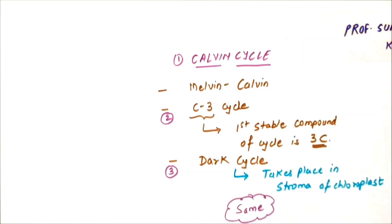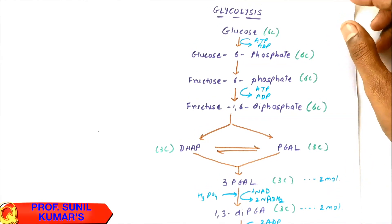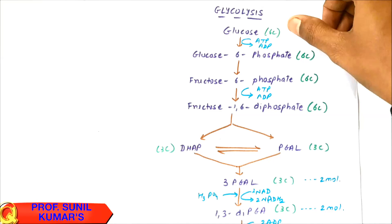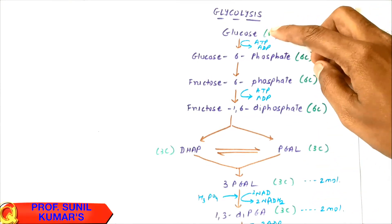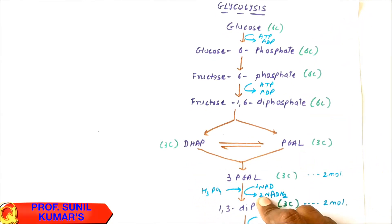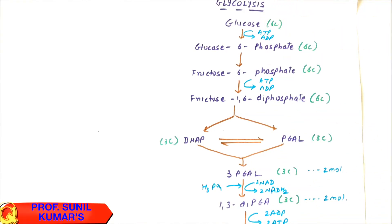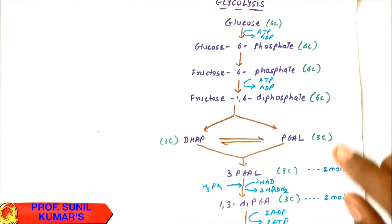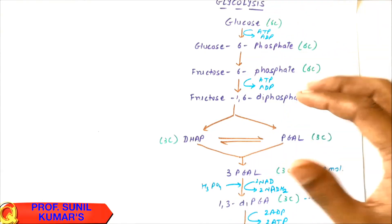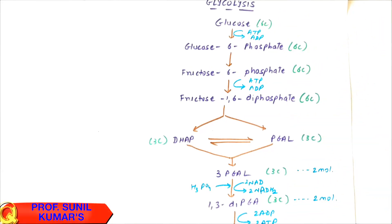To understand the Calvin Cycle, you should first understand glycolysis. The Calvin Cycle is essentially a reverse of glycolysis — most of the steps of glycolysis are reversed in the Calvin Cycle. So first learn glycolysis, then we can go through the Calvin Cycle.